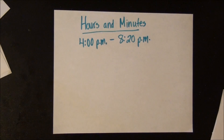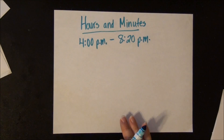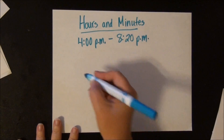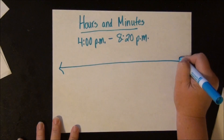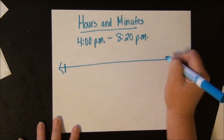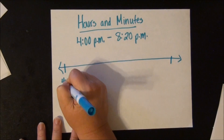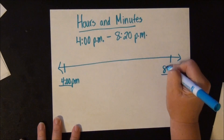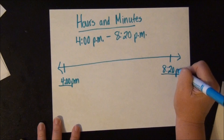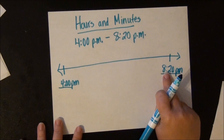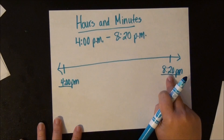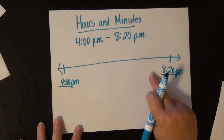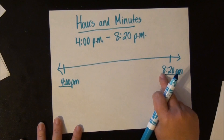The next type is hours and minutes. Let's say the babysitter was at your house from 4 p.m. to 8:20 p.m. and your parents need to figure out how much to pay her. So you draw an open number line again with your beginning and end times. Because this ends with minutes — not zeros at the end — we know that we're going to have hours and then some amount of minutes.